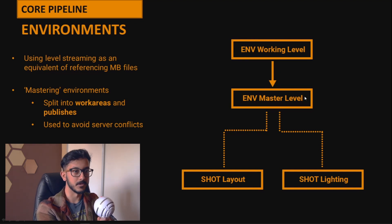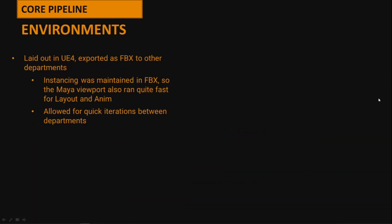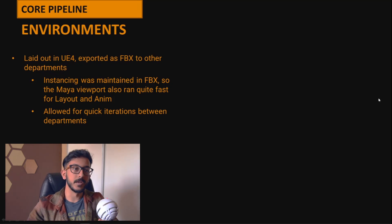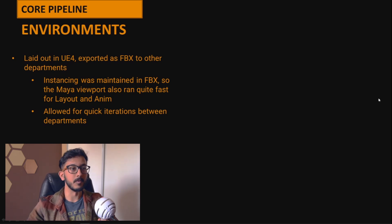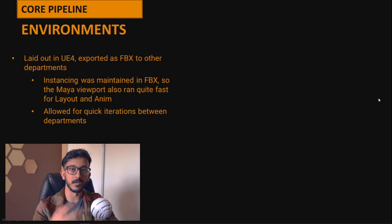Once changes are propagated to the master level, that master level gets streamed into our layout task — where all animation gets laid out and imported from Maya — and into our lighting task. A big benefit with environments was that once laid out in Unreal, if we wanted to place a million rocks, Unreal could handle all that geo because it's great at handling instancing. And Unreal's built-in FBX system maintains that instancing when exporting environments to Maya for the layout or animation department.